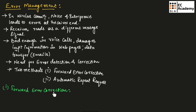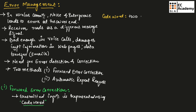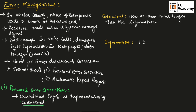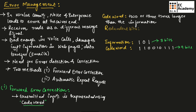Let us understand forward error correction. In forward error correction, the transmitted information is represented using a code word. The code word is two or three times longer than the information. For example, if the information bit is 1 0 1, the code word might be 1 1 0 0 1 0 1 1 1 — nine bits. These extra bits added to the information are known as redundant bits. Redundant bits allow the receiver to recover the original information.